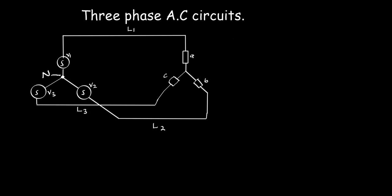What we are going to do is learn how to calculate the line voltage, the phase voltage, the line current, and the phase current for this kind of circuit. For the star connection we have a point known as the neutral point — that is the point where all the voltage sources meet. On the load side we will also have a neutral point.